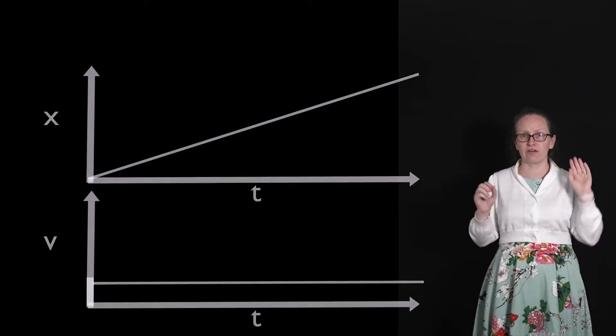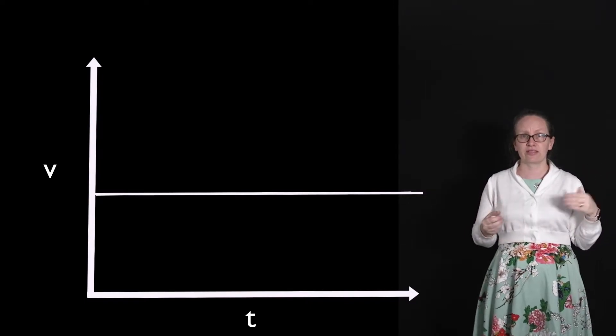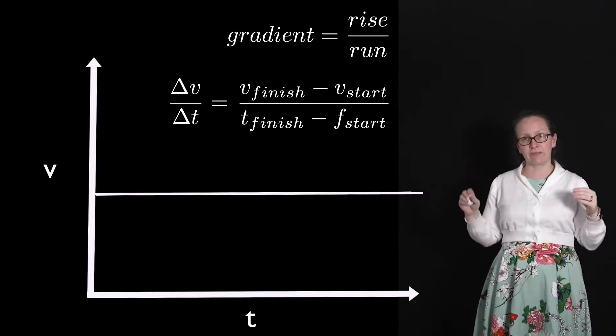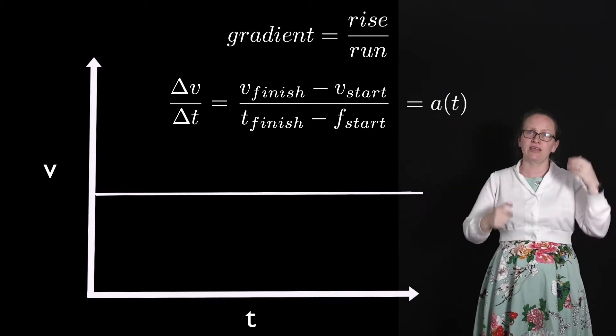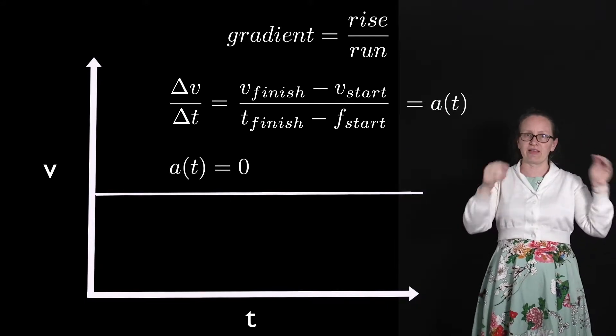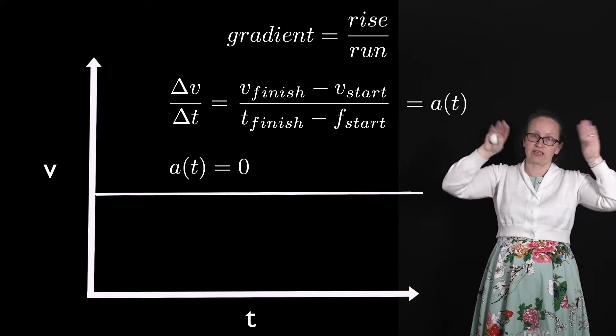The other thing we can read from a velocity-time graph is the acceleration. The gradient is the rise over the run, which in this case is velocity over time — giving us the acceleration. For our object traveling with constant velocity, the acceleration is zero, and we can see that on the graph as it has a horizontal line with a gradient of zero.